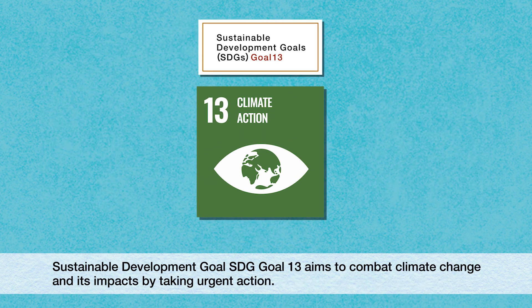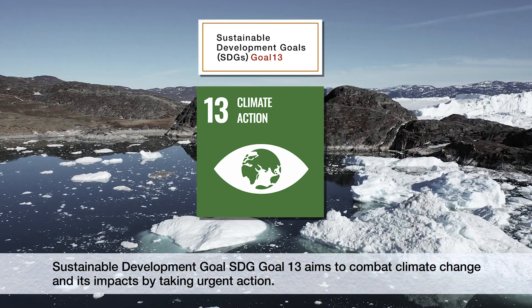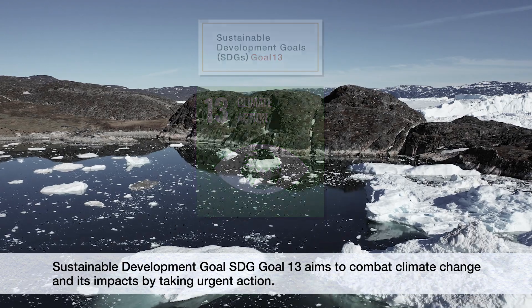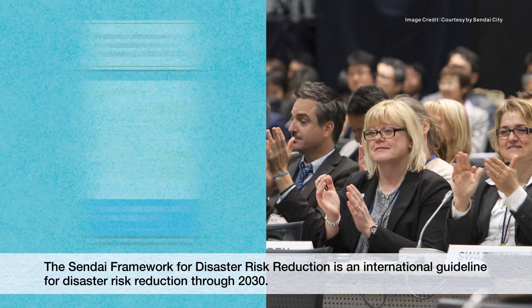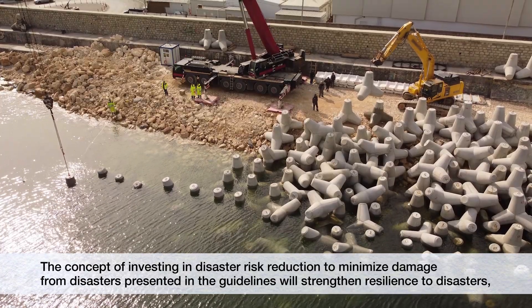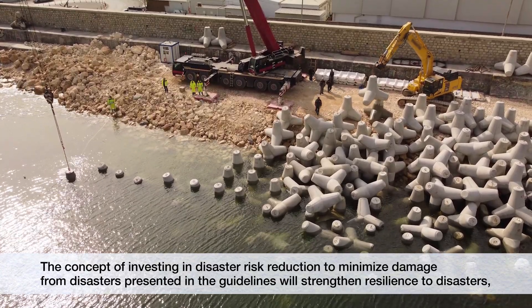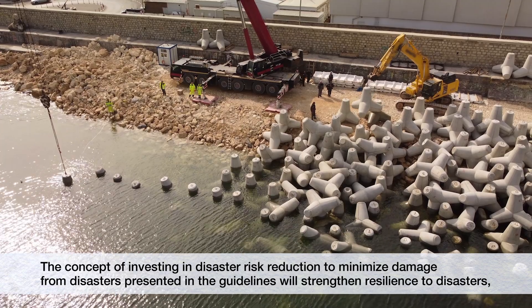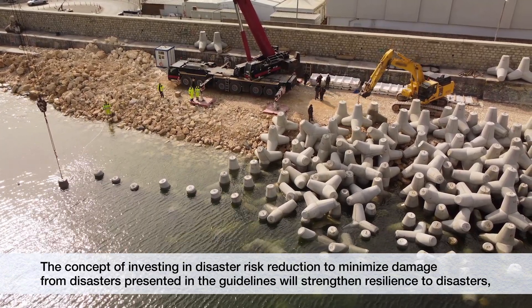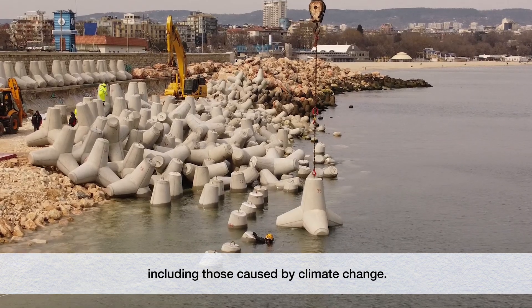Sustainable Development Goal SDG Goal 13 aims to combat climate change and its impacts by taking urgent action. The Sendai Framework for Disaster Risk Reduction is an international guideline for disaster risk reduction through 2030. The concept of investing in disaster risk reduction to minimise damage from disasters will strengthen resilience to disasters including those caused by climate change.